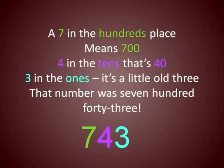Seven in the hundreds place means seven hundred. Four in the tens, that's forty. Three in the ones, that's a little old three. That number was seven hundred and forty-three.